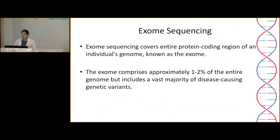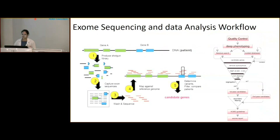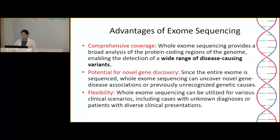To overcome these limitations, there is the option of exome sequencing. Exome sequencing covers the entire protein-coding region of an individual's genome. Although the exome comprises approximately only 1–2% of the entire genome, it includes the vast majority of disease-causing genetic variants. The workflow and analysis are more complicated, but reporting guidelines remain the same. Advantages include comprehensive coverage for a wide range of variants, potential for novel gene discovery, and flexibility for various clinical scenarios including reverse phenotyping.